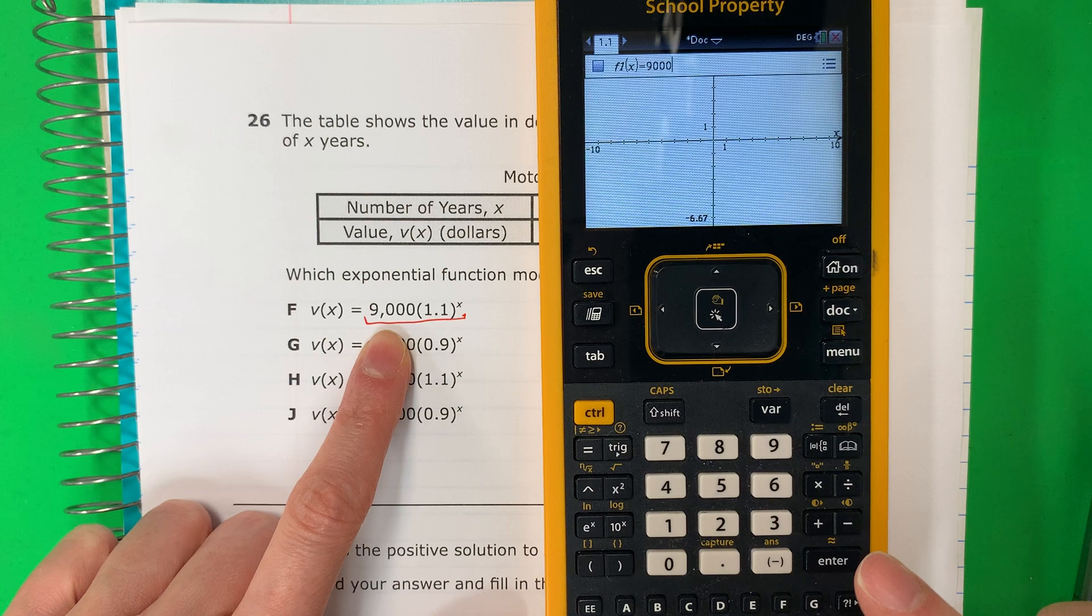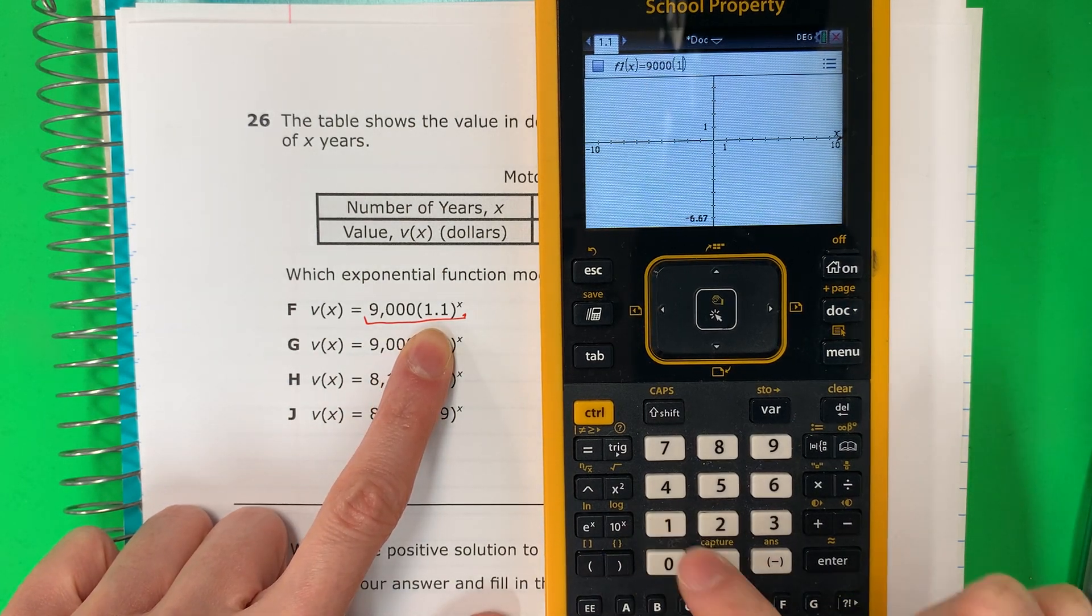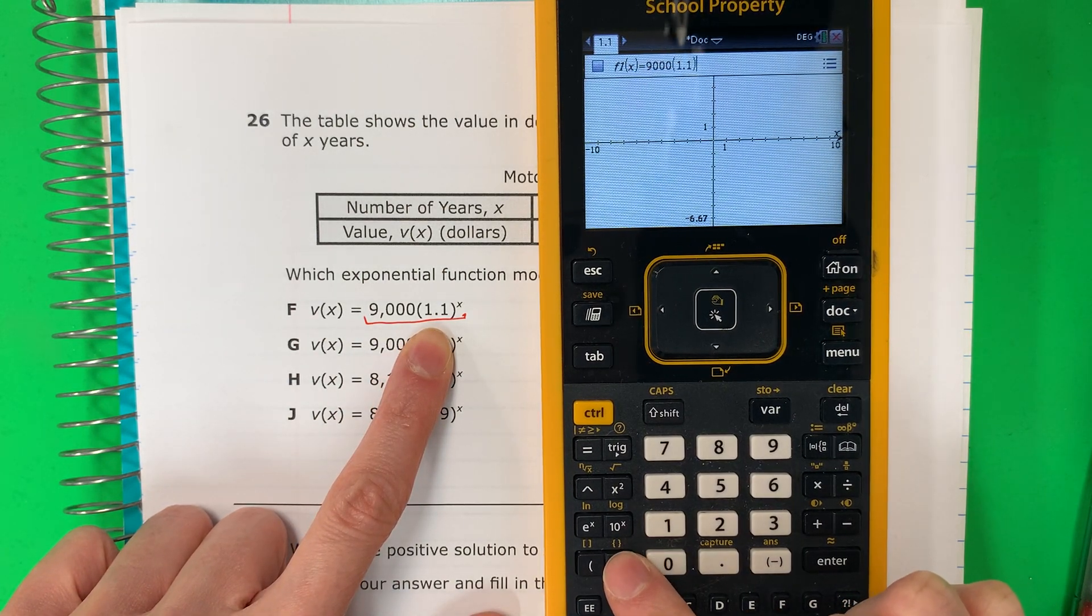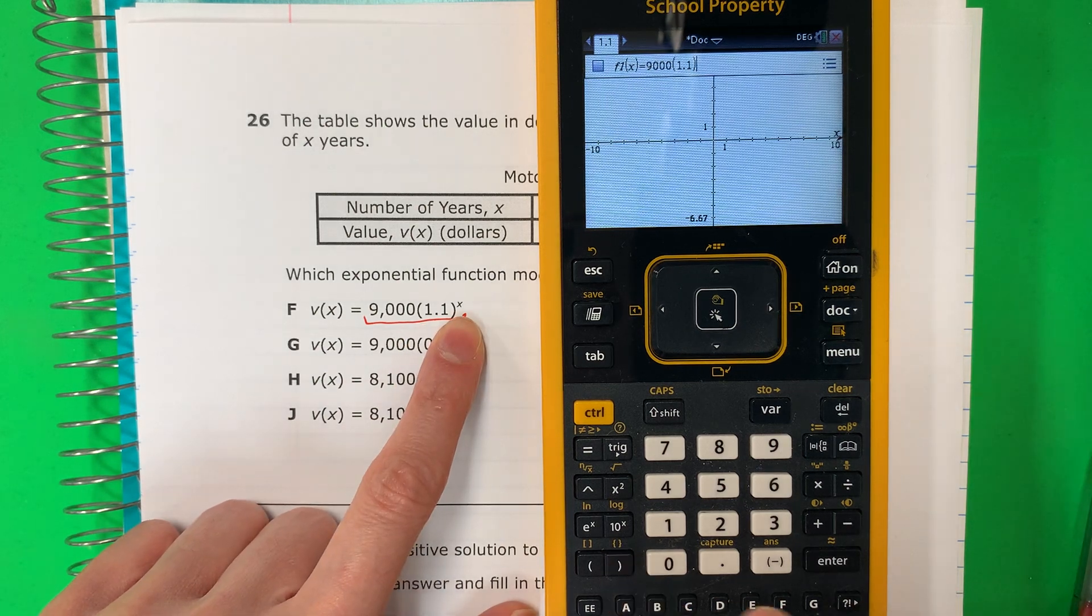9000. No comas. Sin comas. Parenthesis. 1.1. Close. Cierra paréntesis. Exponent X. Exponente X.